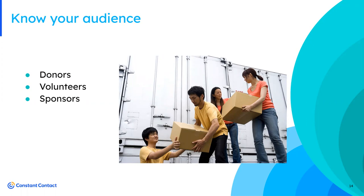If a consistent segment of your contact list isn't opening or clicking on your emails, it may be time to pull those recipients aside and test out a new messaging tactic. Take a look at what engaged contacts have clicked on — the more you know, the better. We give you those segmenting tools and click-through rate analytics. When you ask supporters to opt into communication, ask for their name and email — but also meaningful questions like what type of support they're interested in providing, what topics they'd like to be updated on, and even their birthday. We have a tool to send automated birthday emails. Sometimes less is more — get what you need, and you can always get more information later.